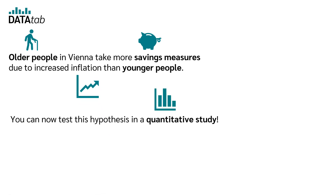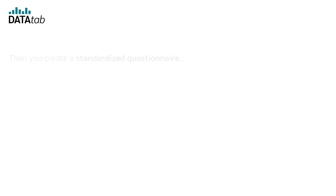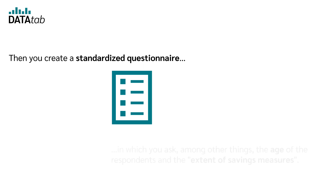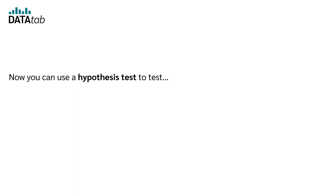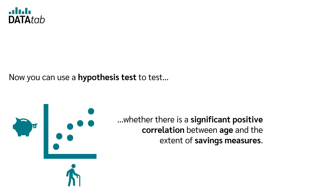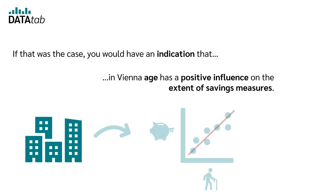You can now test this hypothesis in a quantitative study. First, you think about how to make savings measures measurable. Then you create a standardized questionnaire asking, among other things, the age of respondents and the extent of their savings measures. You then use a hypothesis test to determine whether there is a significant positive correlation between age and the extent of savings measures. If that is the case, you have an indication that, in Vienna, age has a positive influence on the extent of savings measures.